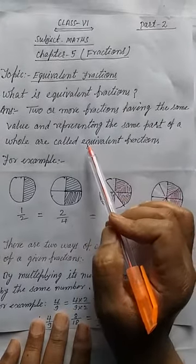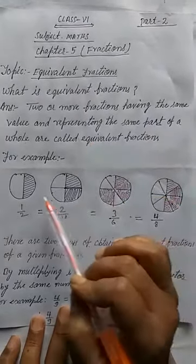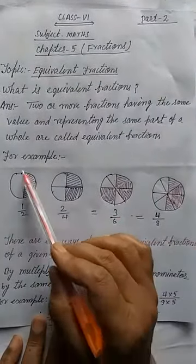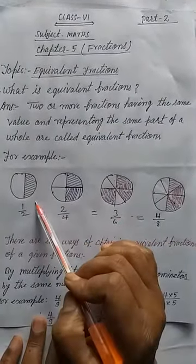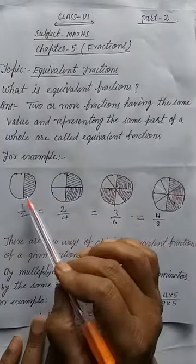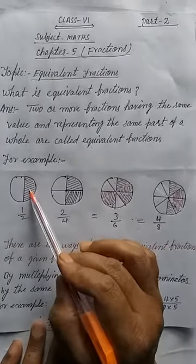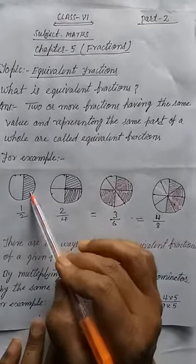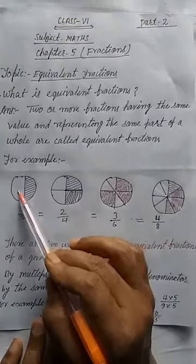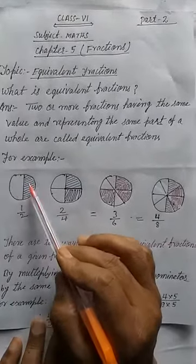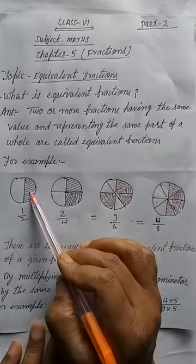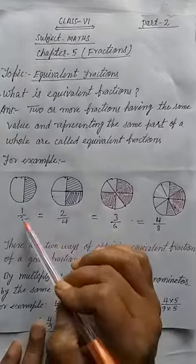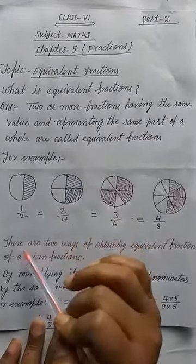Now, try to understand by looking at the following figure. I have already drawn the figure here. This is a circle. For example, we can say it is 1/2. This figure is divided into two equal parts, meaning 1/2 is shaded and 1/2 is not shaded. If we add 1/2 plus 1/2 we will get 1.